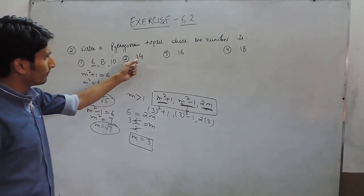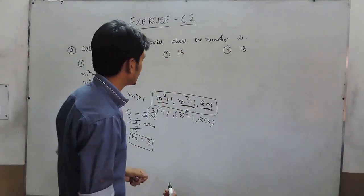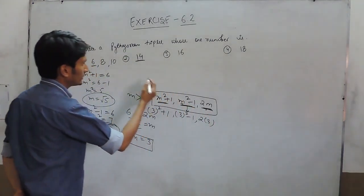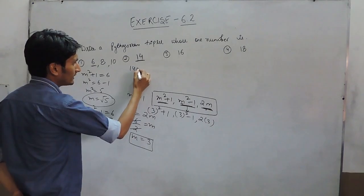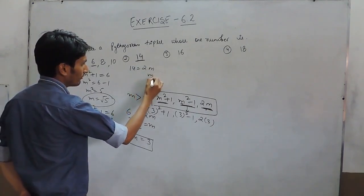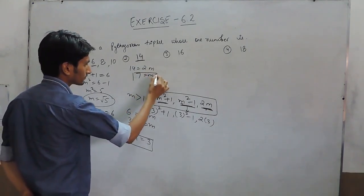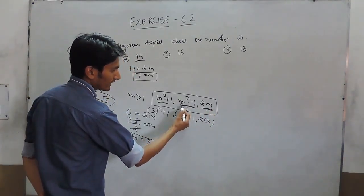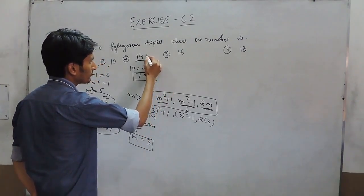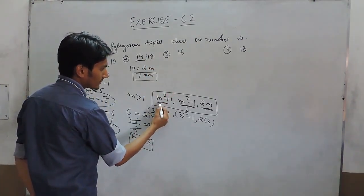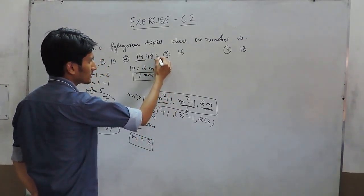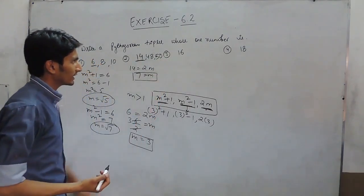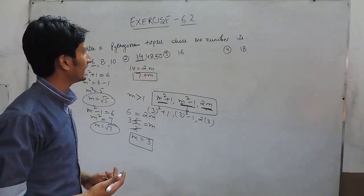Same process we have to apply on these cases. So the value of this must equal 2m, so in this case 14 = 2m, so the value of m must be 7. If the first value is 14, the second must be 49 - 1 which is 48, and this is 49 + 1 which equals 50. So the other remaining two triplets should be 48 and 50.